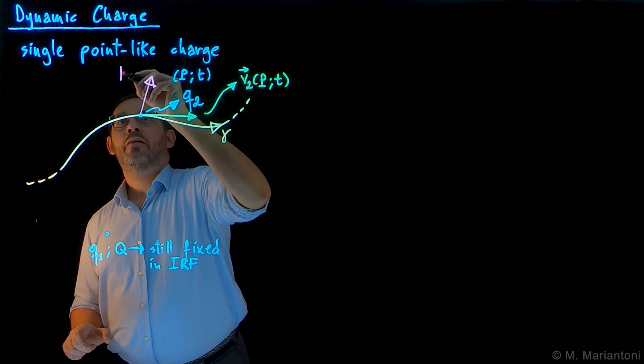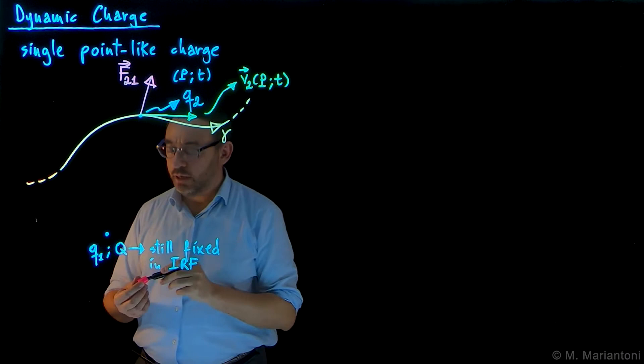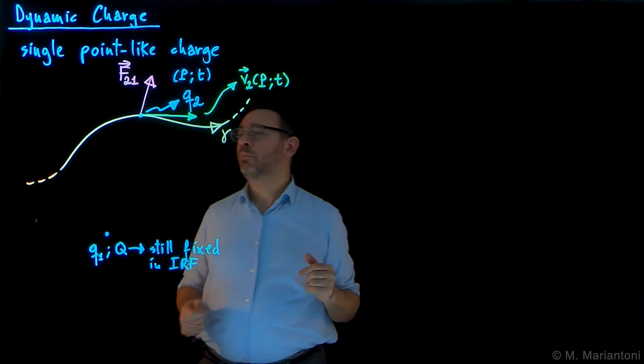We then measure, by means of a dynamometer for example, the force which we know is due to Coulomb's law due to q1 and q2. We know from Coulomb's law that it has to go in this direction. Let's call this force F21 at point P, t.